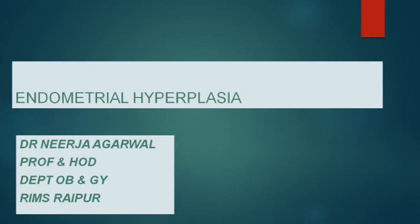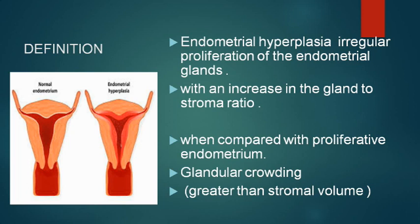Today's topic is endometrial hyperplasia. Endometrial hyperplasia is the irregular proliferation of endometrial glands. The uterus has perimetrium (serosa) on the outside, myometrium in between, and the inner cavitary lining is the endometrium. The endometrium has two layers: the functional layer and the basalis layer. The endometrium has both glands and stroma. When there is a proliferation of endometrial glands causing glandular crowding — an increase in the gland-to-stroma ratio, with more glands and less stroma — that condition is called endometrial hyperplasia, and it must be compared with the normal proliferative phase endometrium of the first 14 days.